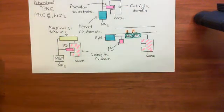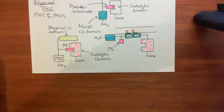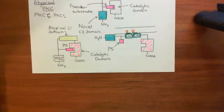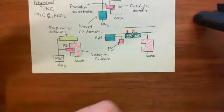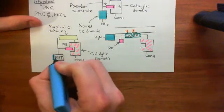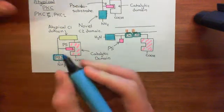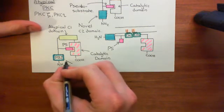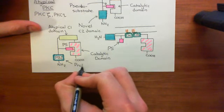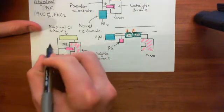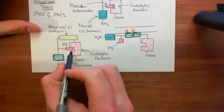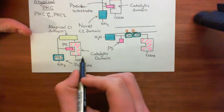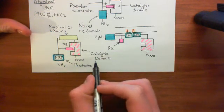Therefore, they're not activated by calcium because they don't have a C2 domain, and they're not activated by diacylglycerol. They're not activated by any of the things produced looking at this G-protein coupled pathway. The PBI domain is a domain that can be activated by protein-protein interactions — other proteins can come in and interact with this PBI domain, triggering a conformational change that moves the pseudosubstrate out of the active site of the catalytic domain, hence activating the atypical protein kinase C.